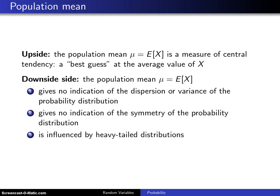Before we move on to some topics in expectation, this is one final summary of the population mean. The upside to the population mean, which is the Greek letter mu, also written as the expected value of x, is that it is a measure of central tendency — a best guess at the middle of the distribution, or the average value of the random variable x.